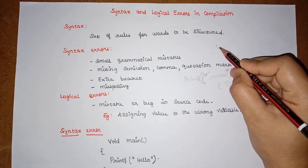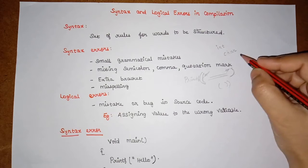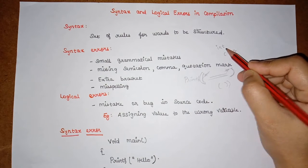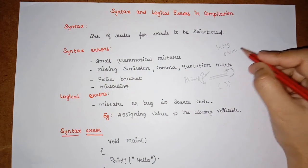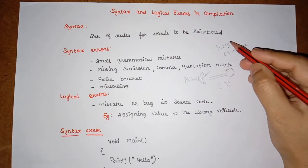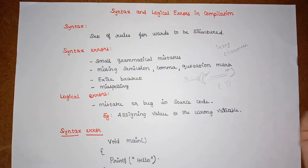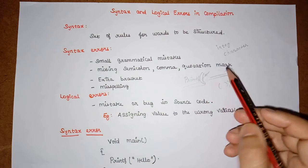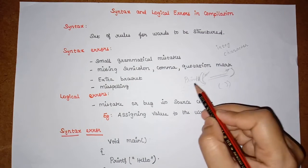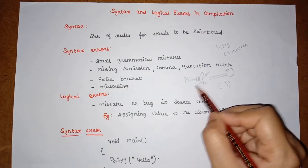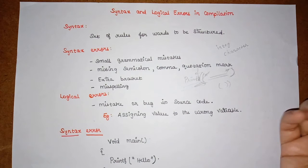Misspelling is another cause of syntax errors. In C language, we use keywords like data types — for integer data we use 'int', and for character data we use 'char'. If instead of writing 'int' I write 'integer', or instead of 'char' I write 'character', those misspelled keywords will lead to a syntax error. Similarly, if instead of writing 'printf' I write just 'print', missing the 'f', I will get a syntax error.